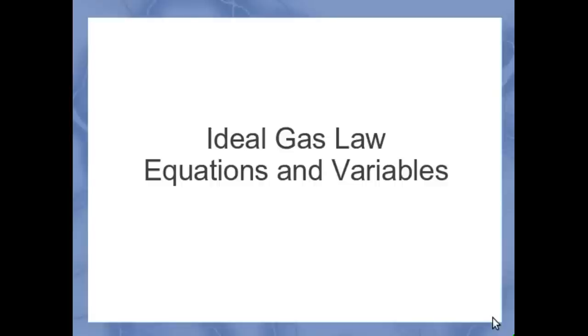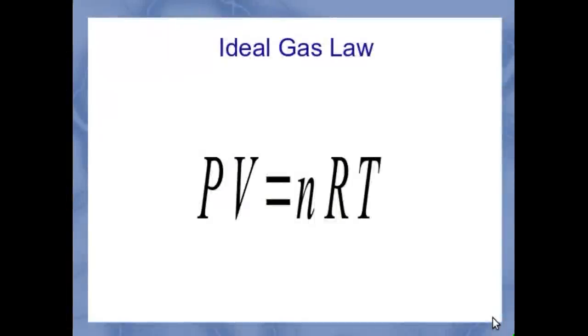Now we can look at the ideal gas law. Specifically, we're going to look at the equations and the variables involved in this equation. Seen in a textbook, you'll see PV equals nRT. This is the way we express it in physics.